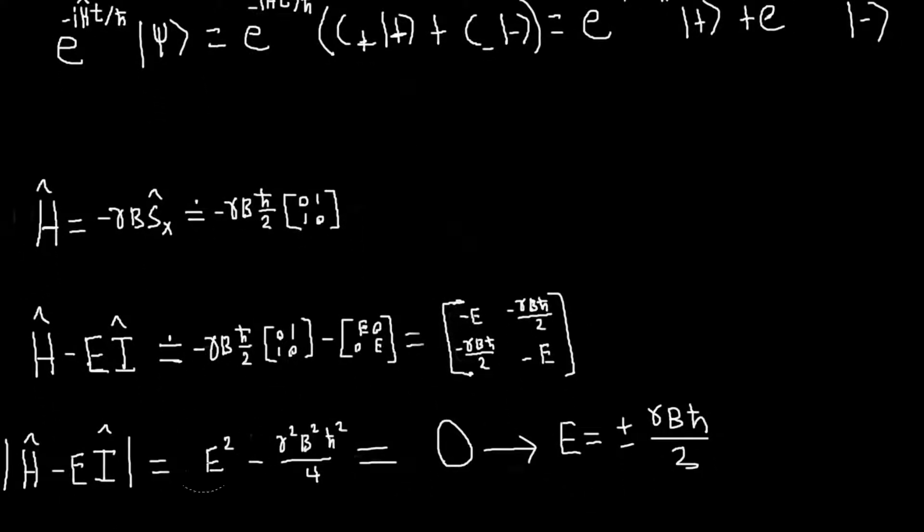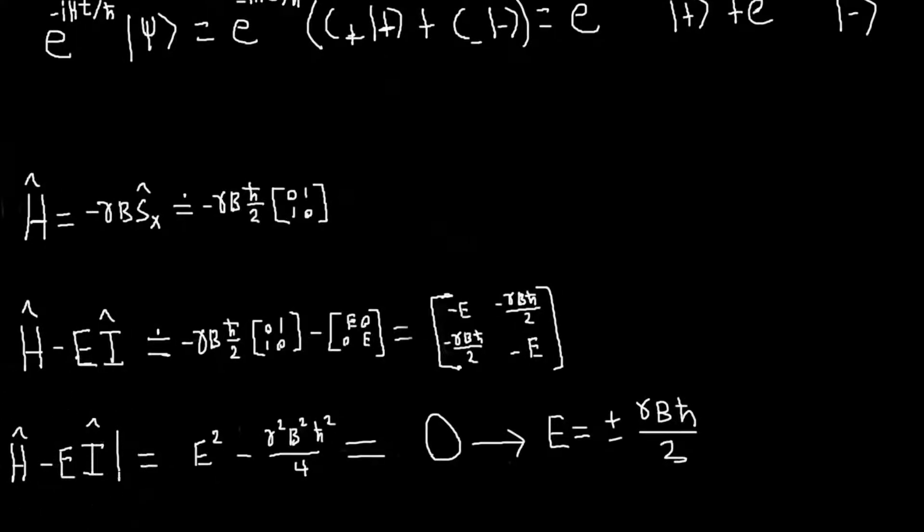And then what we do is we take the determinant of this thing, and we get, this is just minus E times minus E, so it's E squared, minus this times this, which is minus this, and we set that equal to zero. And this will give us our eigenvalues. So in this equation, E is kind of an unknown. And once we set this determinant equal to zero, we get this quadratic equation for E. So this tells us what our eigenvalues are. So we get E equals plus and minus gamma b h bar over two.